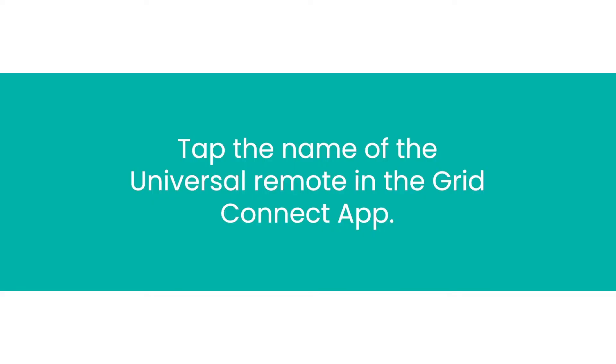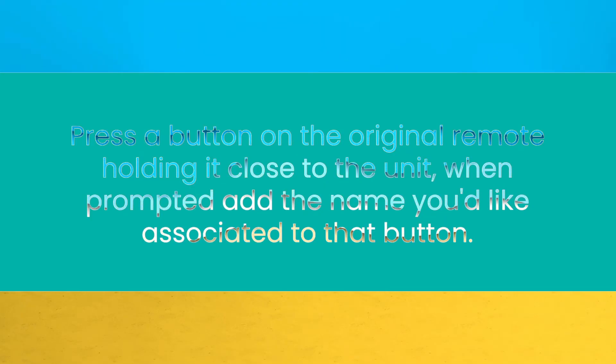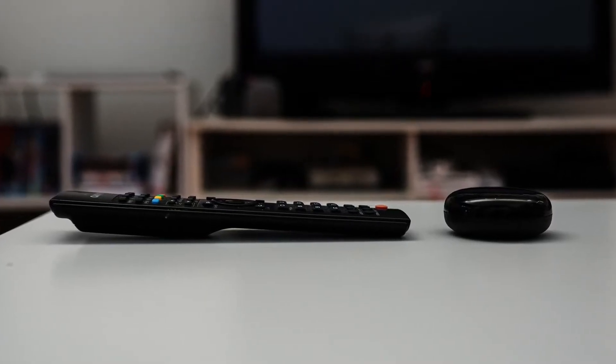Press the button on the car's TV remote, holding it close to the black device, to add the name you'd like associated to that button.